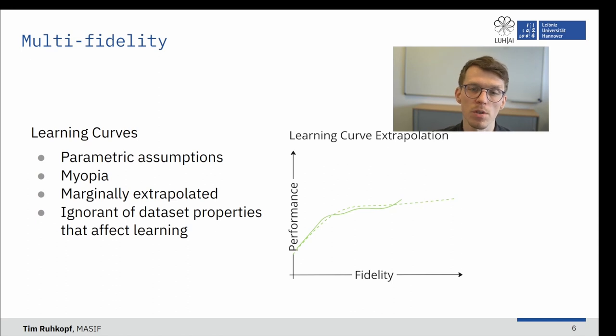First, we had to make parametric assumptions. Second, we had to base our extrapolation solely on what we were able to observe. We refer to this as myopia or short-sightedness. Third, we have to evaluate all of the algorithms to get some idea about their likely trajectory. And lastly, we have ignored anything we might have known about the past datasets or how one curve might be elucidating for another.